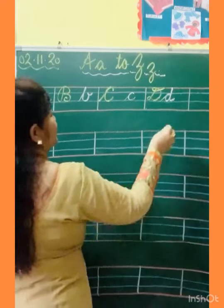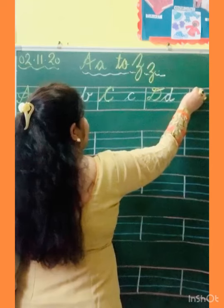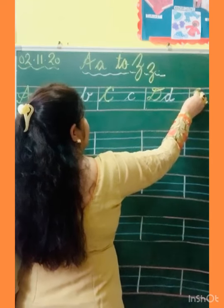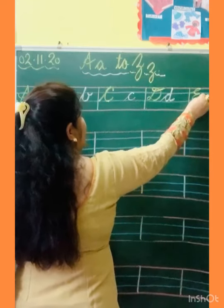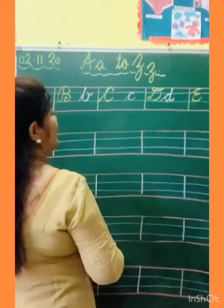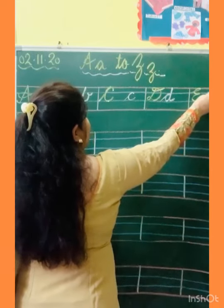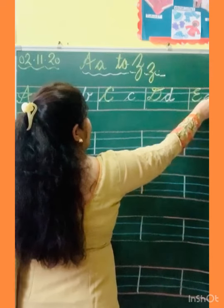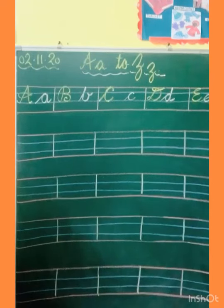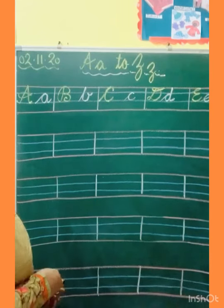Now E. How to make E? Slanting line, turn, one circle, second circle, touch the line, and kick. And now small E: slanting line, turn, make curve, and kick. This is capital E. This is small E.